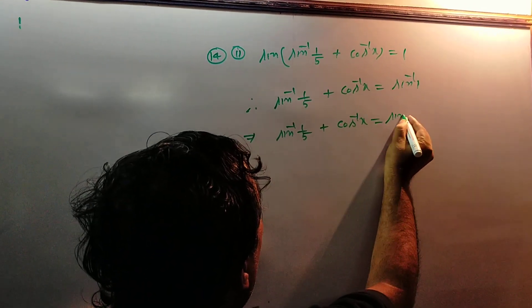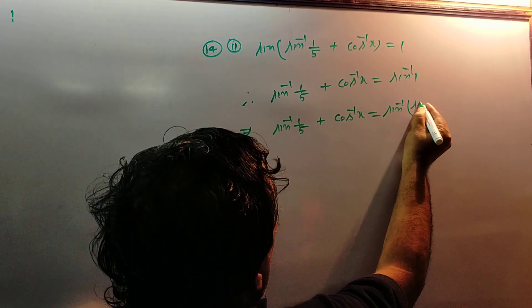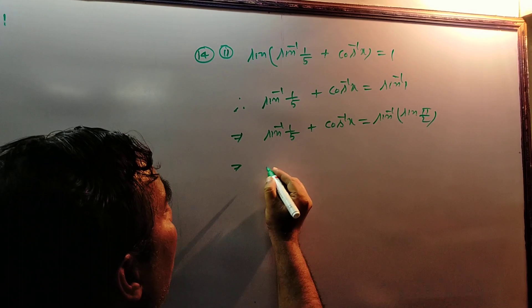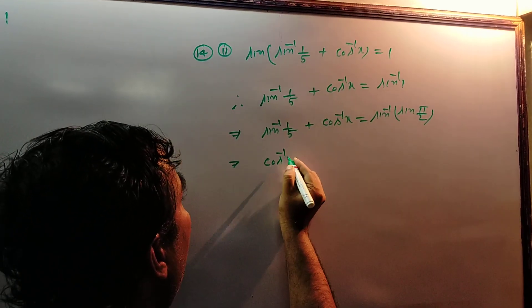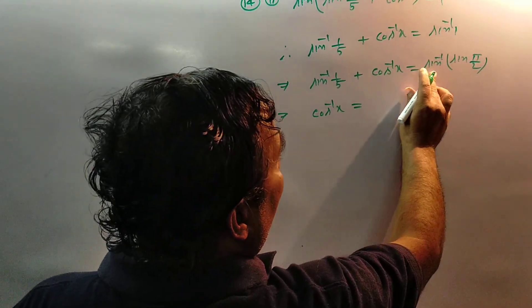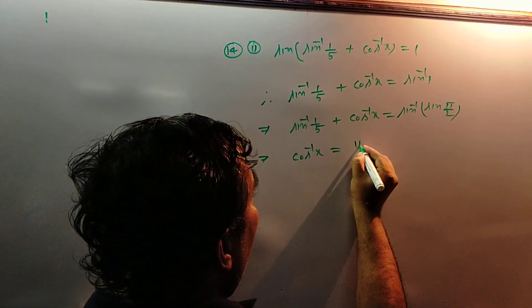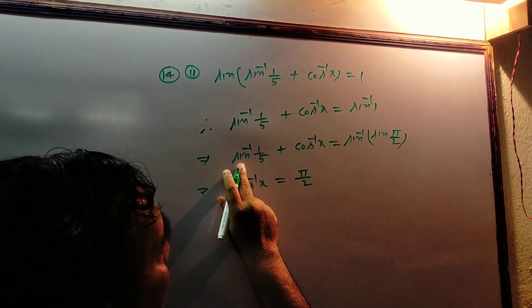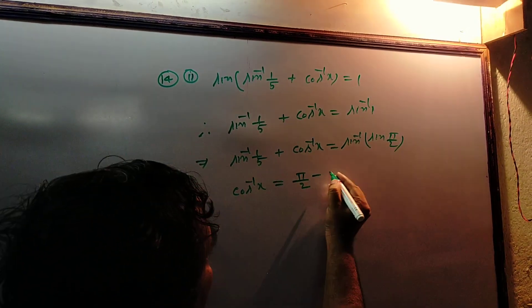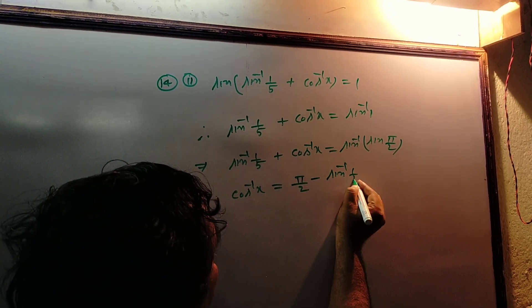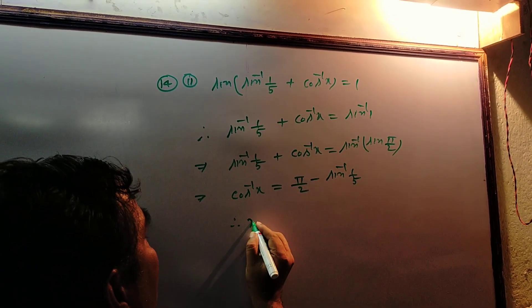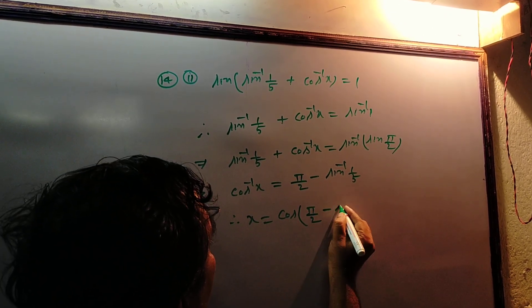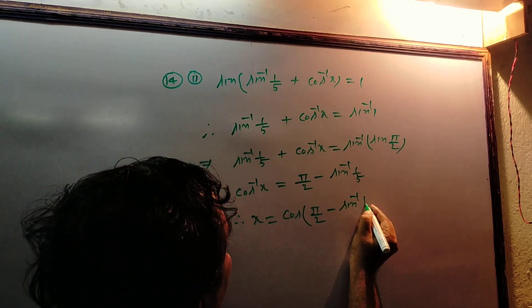sin⁻¹(1/5) + cos⁻¹(x) = π/2. Moving sin⁻¹(1/5) to the right side, cos⁻¹(x) equals π/2 minus sin⁻¹(1/5). Therefore x = cos(π/2 − sin⁻¹(1/5)).